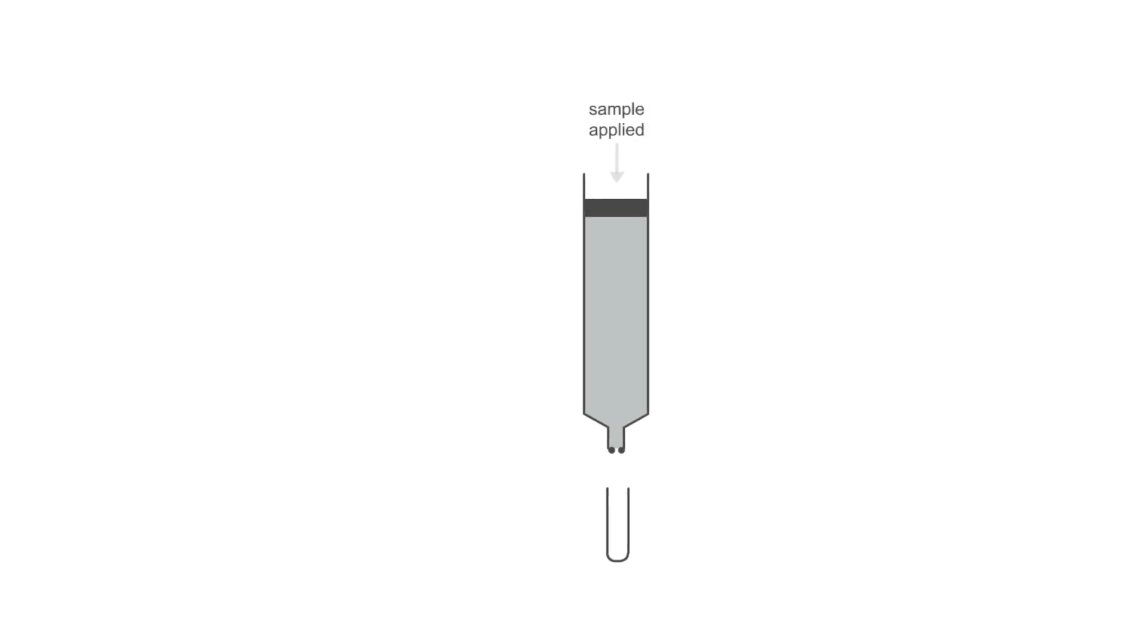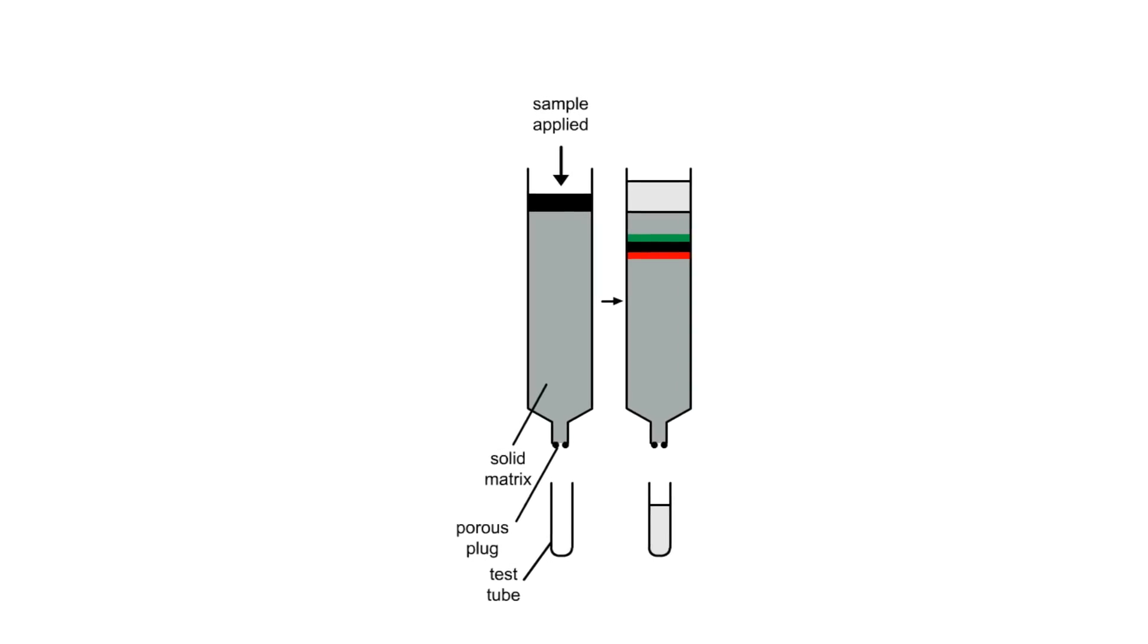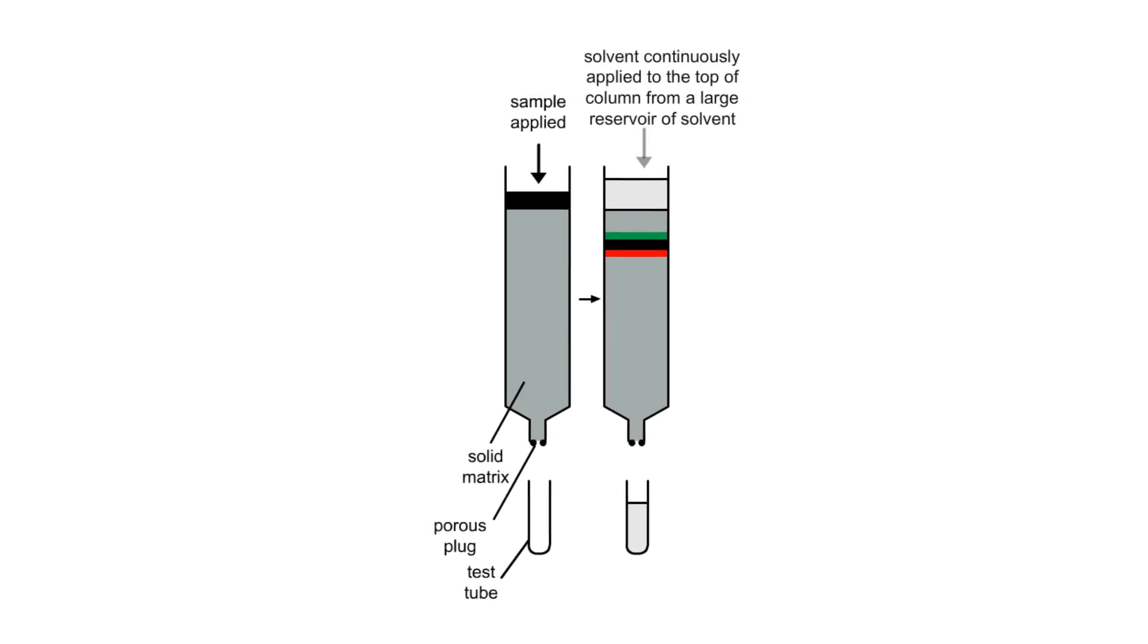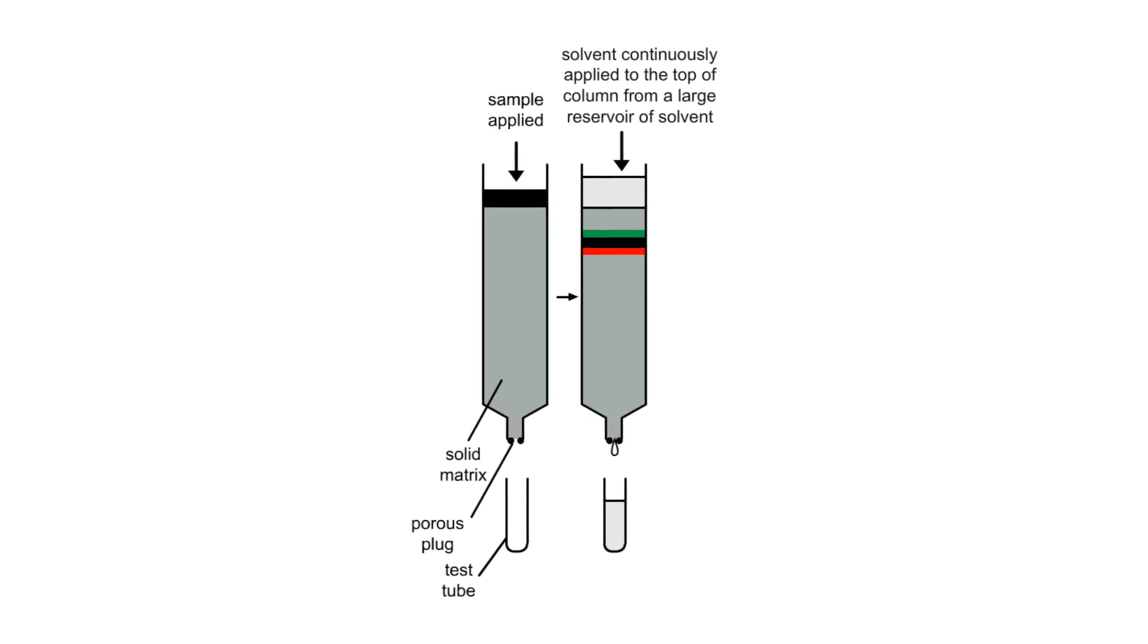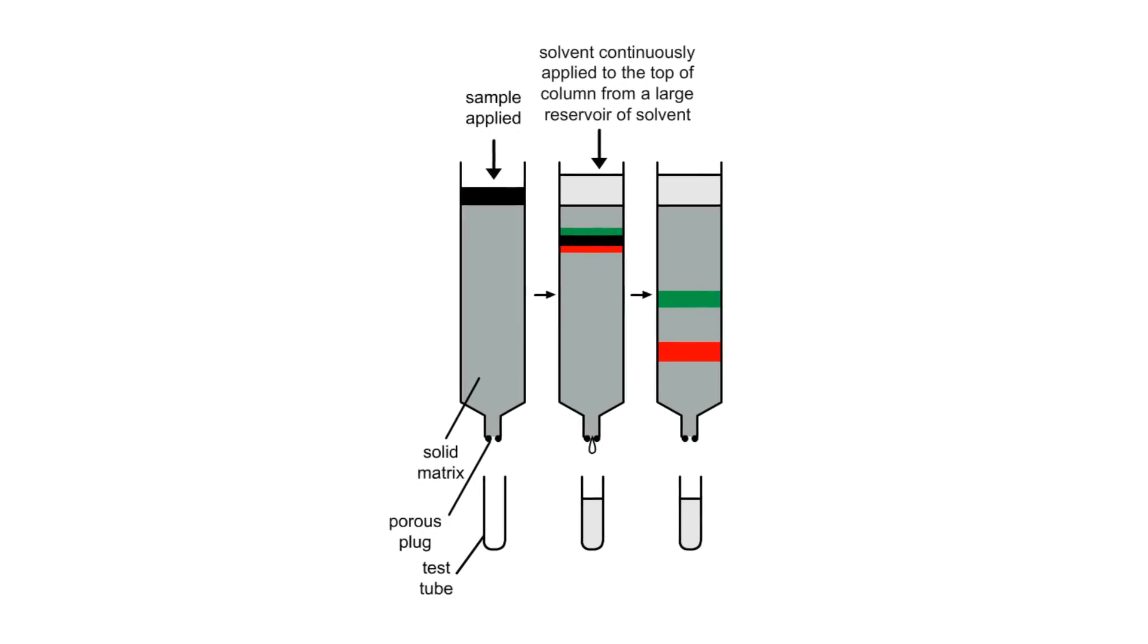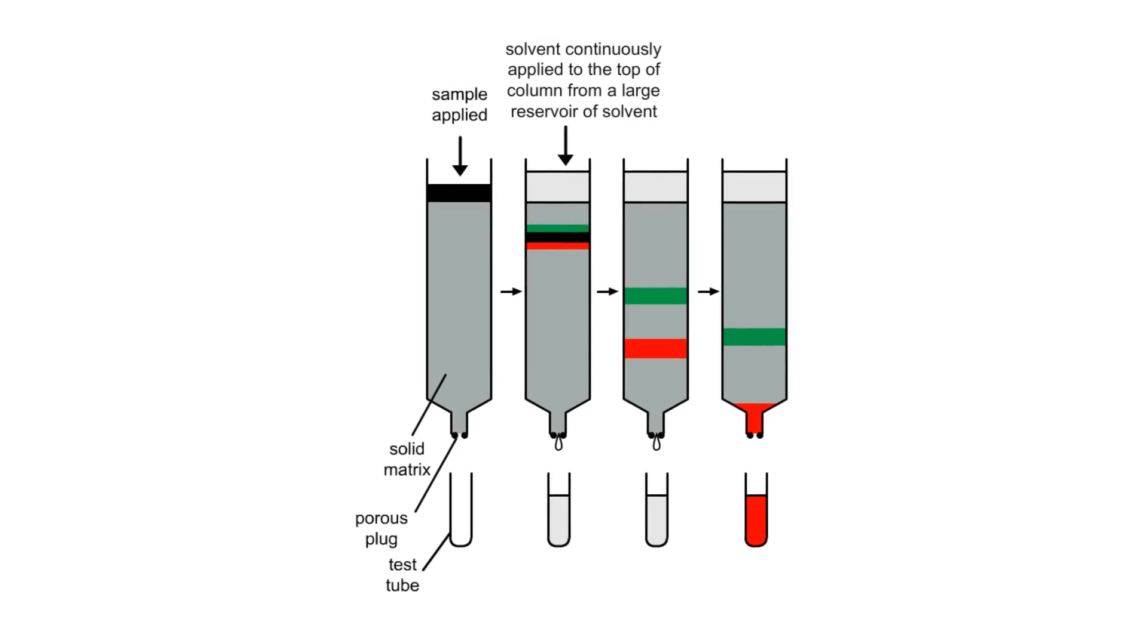In column chromatography, a mixture of compounds is applied to the top of a vertical column of solid adsorbent packed in a tall glass cylinder. As solvent is added to the top of the column, the compounds move down the column at different rates.